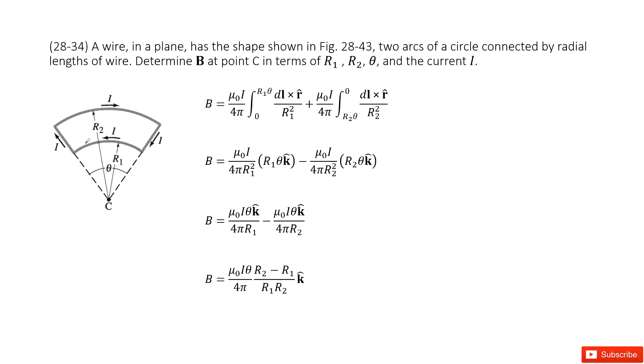First, for the first arc with radius R1, we can consider this is zero when it comes to this side. The angle is theta. So we write down the Biot-Savart law for this arc R1, and then this is the radius R1 squared and DL cross R.